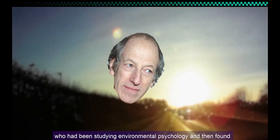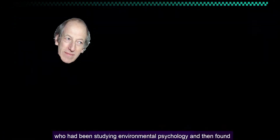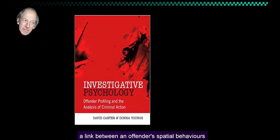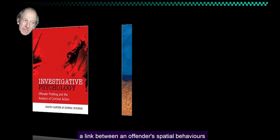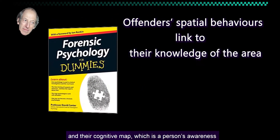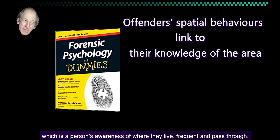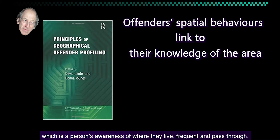The term investigative psychology was first coined by Professor David Cantor in 1994, who had been studying environmental psychology and then found a link between an offender's spatial behaviors and their cognitive map — which is a person's awareness of where they live, frequent, and pass through.